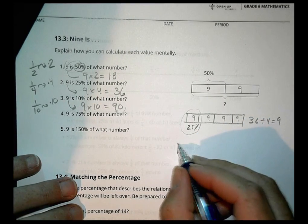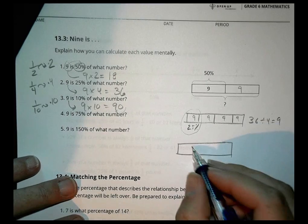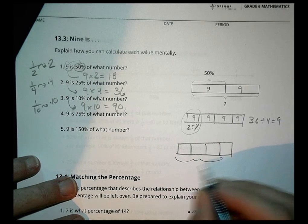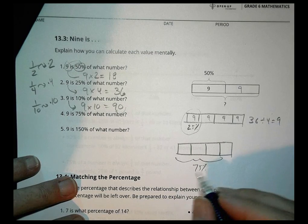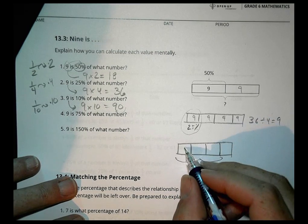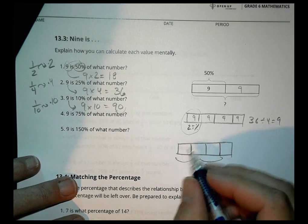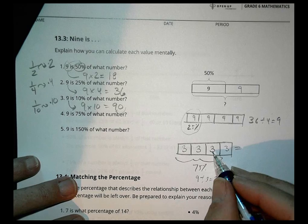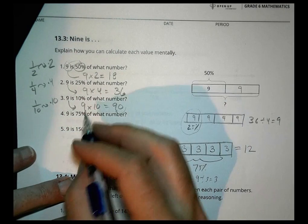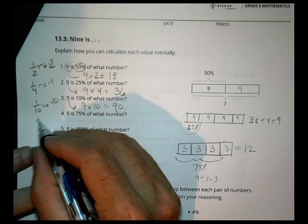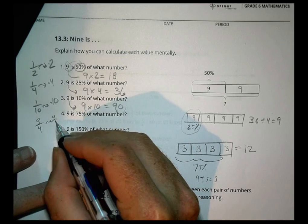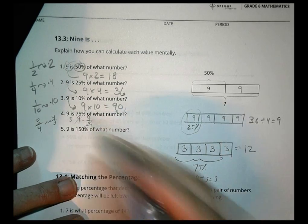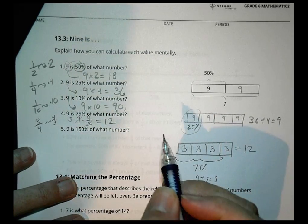9 is 75% of what number? This one's a little different. Think of it like our tape diagram if you need to, and we take it into four segments, and we have 9 being 75% of a number. So that 9 is divided into three parts. 9 divided by 3 is 3, so I have every one of these values is 3, leaving one more 3 right there, for a total of 3 plus 3 plus 3 plus 3 is 12. So I could think of this as 9. I know that 75% is 3 fourths. The reciprocal would be 4 thirds, so I could think of it mentally as 9 times 4 thirds. 3 goes into 9 three times, and 3 times 4 is 12.